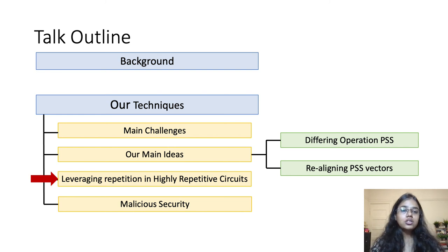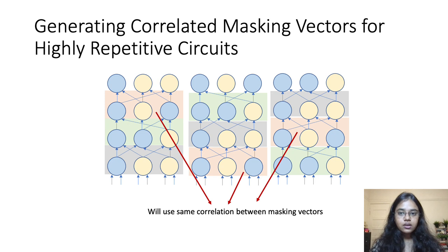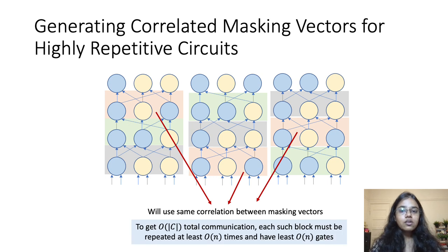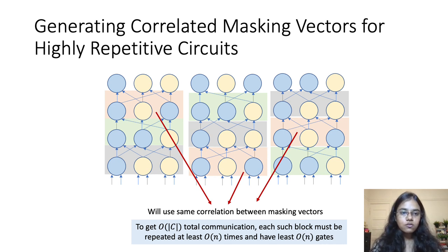The amortized cost is order 1 only if we are able to use all of the order n resulting correlated sets generated by the previous procedure. This is where we leverage the structure of highly repetitive circuits. A highly repetitive circuit consists of blocks of gates with multiple occurrences throughout the circuit. Since these repeated blocks have the same configuration, they require masking vectors with the same correlation. If each such block is repeated order n times, we can use all the correlated masking vectors generated by the batch procedure. Moreover, to get savings from packed secret sharing, we need the length of each block to be at least order n. Both of these properties are satisfied by highly repetitive circuits, and as a result we get an order C MPC protocol for such circuits.